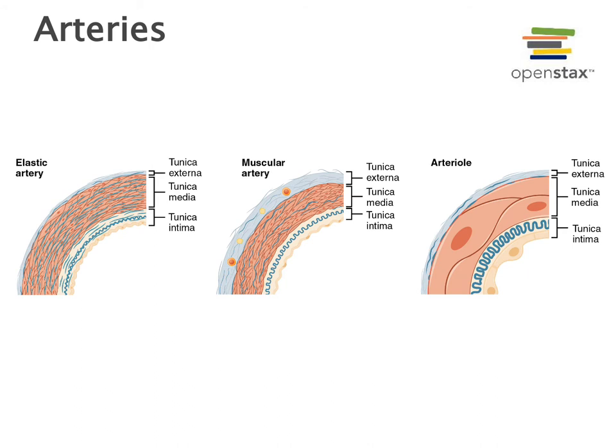The middle layer, known as the tunica media, contains smooth muscle tissue to regulate the diameter of the blood vessel, contributing to regulation of blood flow and blood pressure. The deepest layer, known as the tunica intima, contains a sheet of cells known as a simple squamous epithelium called the endothelium, which functions to create a barrier containing the blood within the blood vessel.